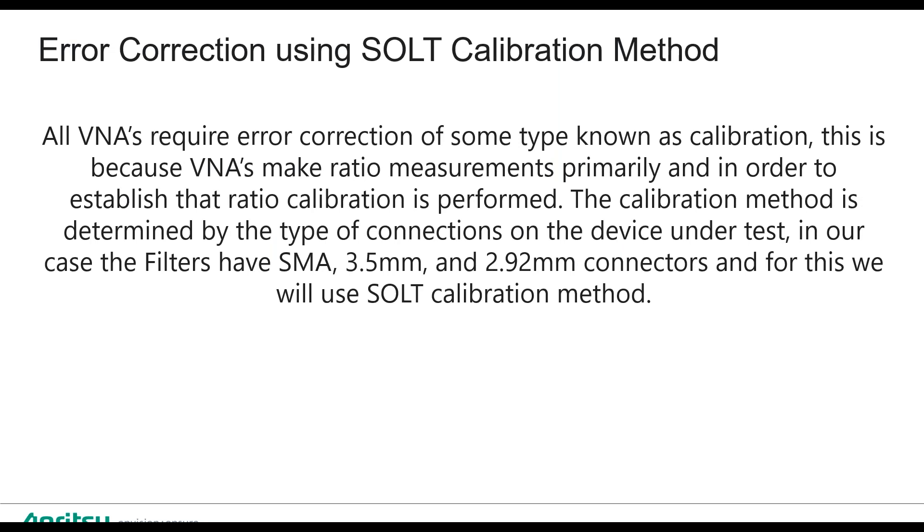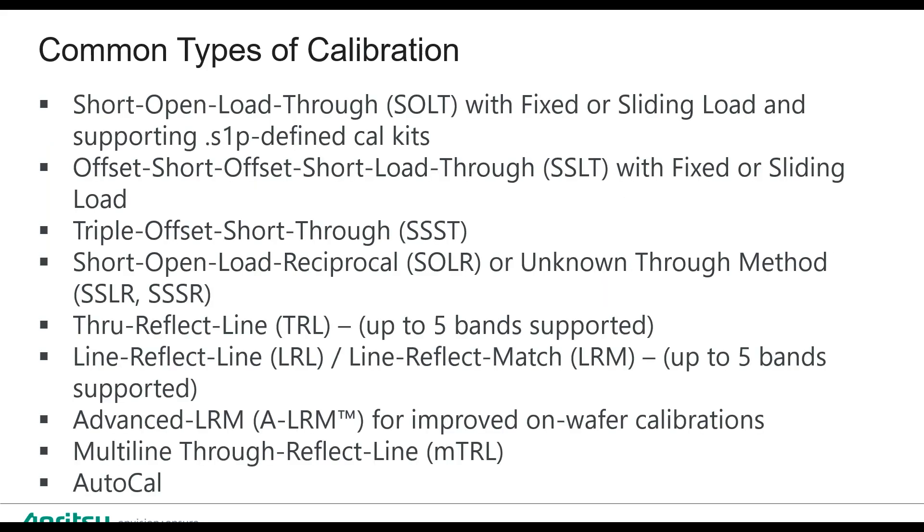Once we set the parameters for the VNA, we have to apply error correction or calibration. In today's case, the devices we're going to measure are SMA 3.5 millimeter, 2.92 millimeter, so we'll be using a 3652A mechanical calibration kit. But you should know that when you perform calibration, that's going to be determined by the DUT or device under test.